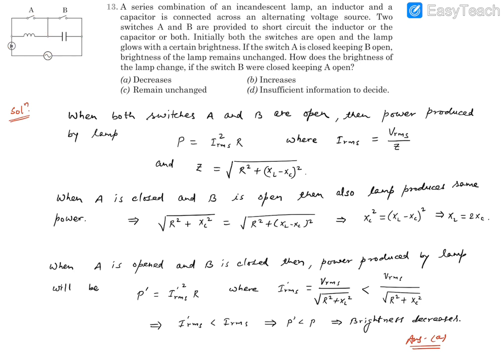And the question says even though switch A is closed keeping B open, brightness does not change. Now if brightness does not change, that means power should not change. So power is going to be IRMS squared times R. R will not change. So that means IRMS remains unchanged.